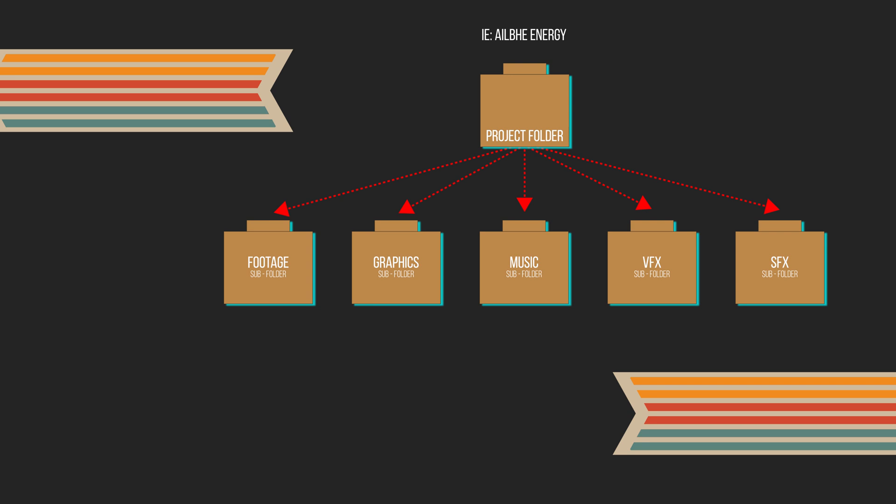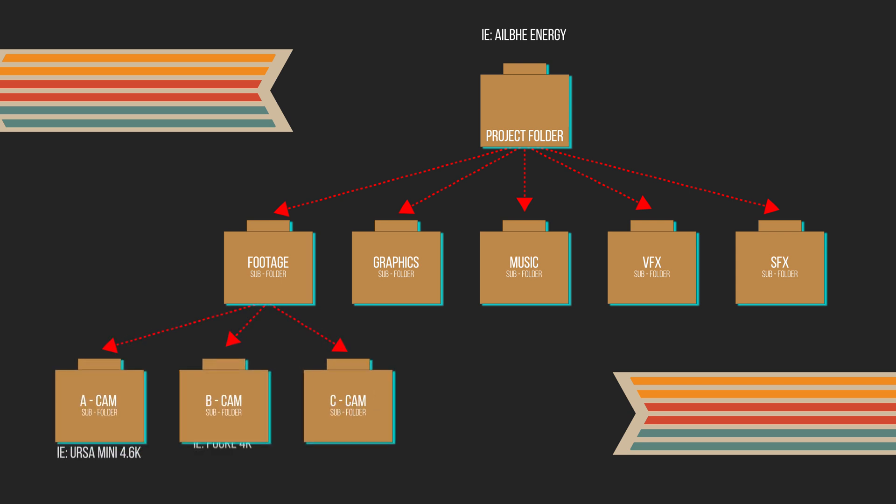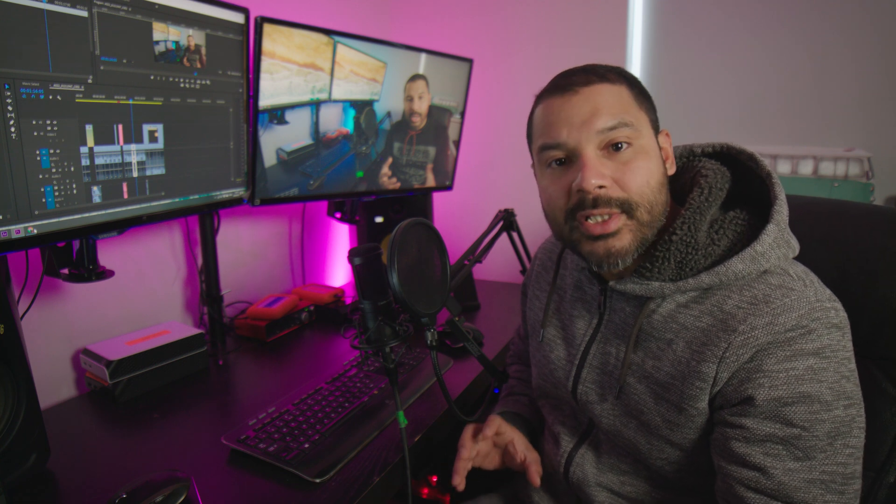In the footage folder, for example, you can then create subfolders to separate the footage from different sources. For this example, A camera is the URSA, B camera is the Pocket, and C camera is the Mavic Pro. If you follow those instructions, you should be able to keep your projects organized and access them anytime in the future. And you'll know where everything is in every folder. There's actually another cool thing — once you organize your folders in Explorer in Windows, you can just drag and drop all the folders inside Premiere Pro and Premiere Pro will create the folder structure you created outside, keeping all your assets in the same place with the same names.